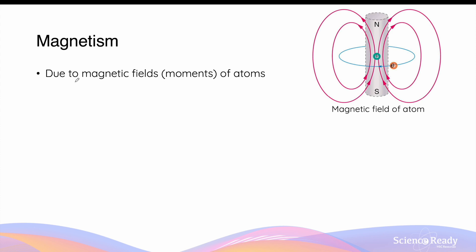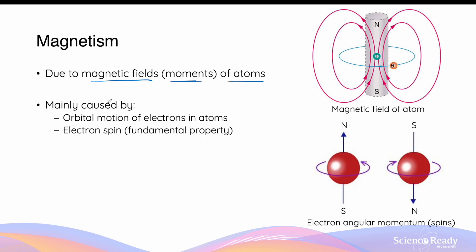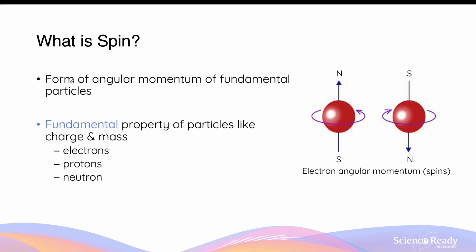Magnetism and the magnetic properties of materials are due to the magnetic fields, or magnetic moments, of atoms that make up the material. These magnetic moments are primarily caused by the orbital motion of electrons in atoms, as well as a property called electron spin. Spin is a form of angular momentum possessed by all fundamental particles, including electrons, protons, and neutrons found in the atom.